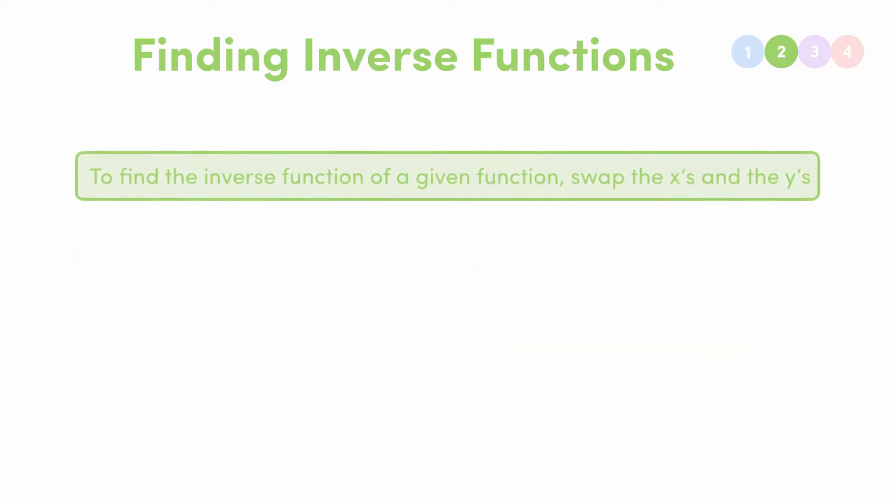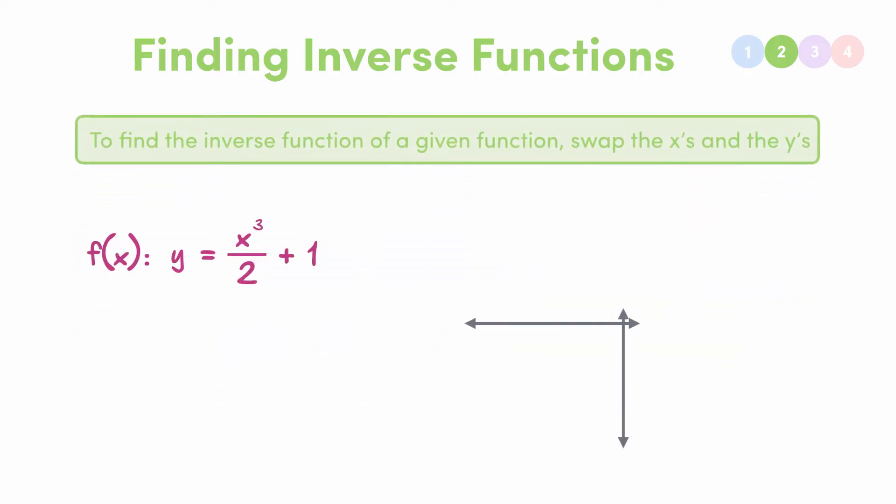So say we had the function y equal to x cubed over 2 plus 1, and that has a graph of this. To find the inverse function, we firstly swap the x's and the y's, which gives us x equal to y cubed over 2 plus 1. And this is our inverse function. This is sometimes called the inverse relation because right now it's a function of y, so if we want to plot it we need to make y the subject. So this is just simple manipulation, chuck the 1 to the left hand side, multiply by 2, giving us y cubed equal to 2 outside of x minus 1, and then y is equal to the cube root of 2 outside of x minus 1. And this is its graph.